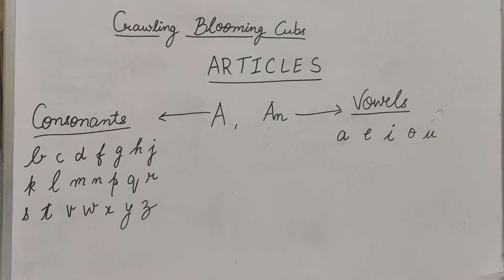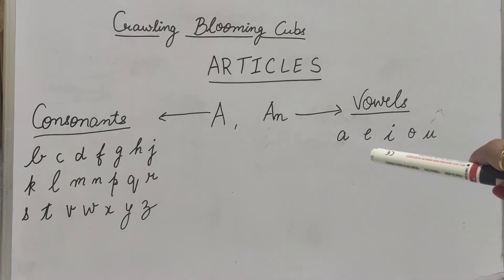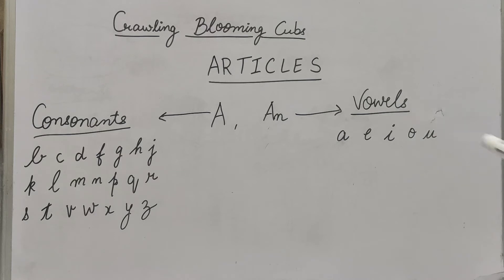Now you can see consonants and vowels. Hum log pehle bhi padh chuke hai — consonants kya hote hai, vowels kya hote hai. So aapko sabko pata hai vowels kya hote hai? A, E, I, O, U.